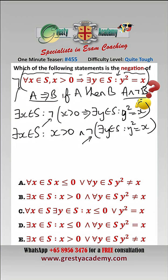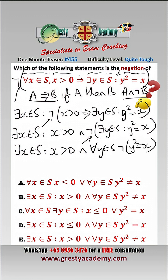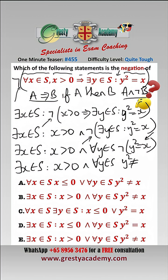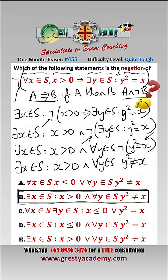Now we need to deal with this remaining negation. The negation of 'there exists' is 'for all', so we have: there exists x contained in S such that x is greater than 0, and for all y contained in S, y squared is not equal to x. This is answer B.